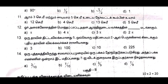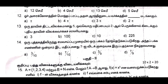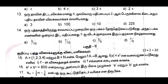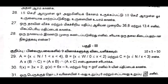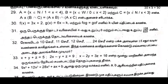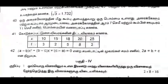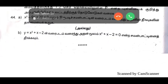The 12th one is C option — 3x3. The 13th one is D option — 3x5, 225. The 14th one is B option — 7x10. The 15th one — 4th one, 7th one.